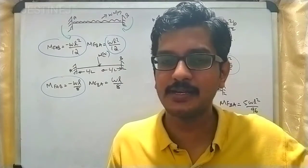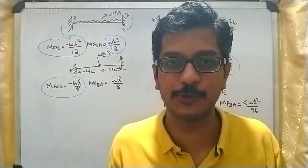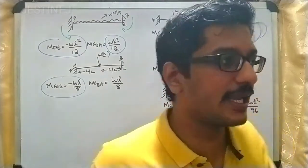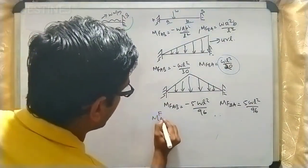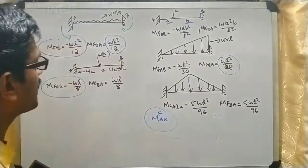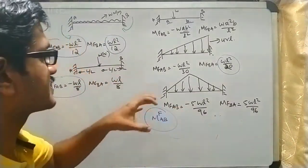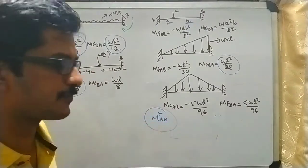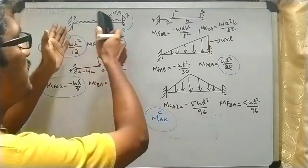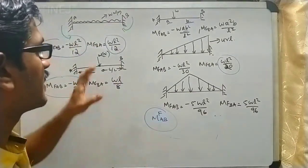We already derived the slope deflection equation formula, and in that case we determined that in that equation there is a term called M of AB, that is the fixed end moment value. So here in this lecture we will note down the different values for these fixed end moments for various loading conditions.